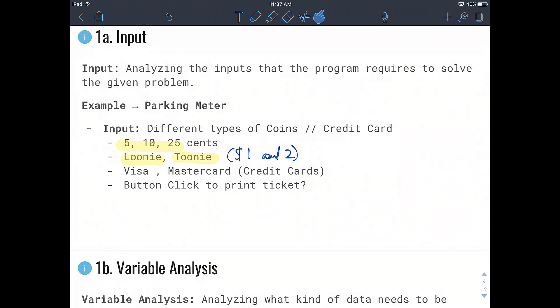We can also have Looney or Tooney, which are the dollar and the two dollar coins available in Canada. Then we also can accept credit cards such as Visa or MasterCard. And then we can have an input button where if the user or the environment clicks on the button, we'll print out the result when necessary.